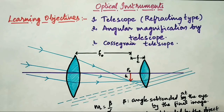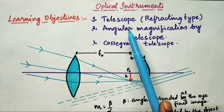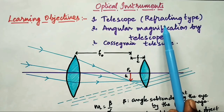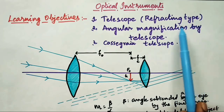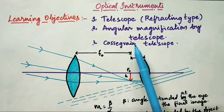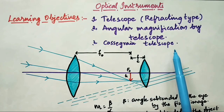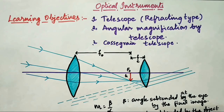Hi everyone, this is the third video in the optical instruments series. The learning objectives of this video lesson are: we will learn about telescopes, which come in two types — refracting type and reflecting type. We will first see the refracting type telescope, then angular magnification by the refracting type, and the third topic is the Cassegrain telescope, which is a reflecting type telescope.